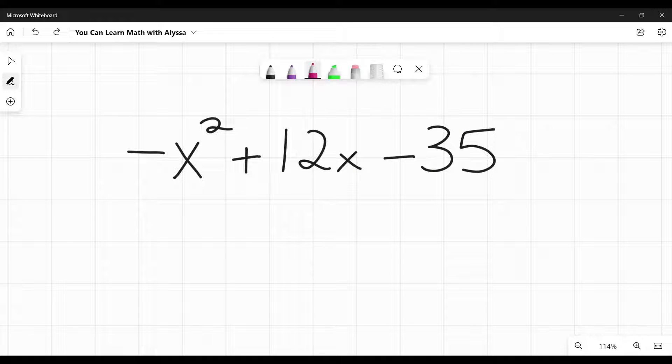When you're asked to factor a quadratic that has a negative in front of the x squared, the easiest way by far is to simply factor out a negative one from the entire quadratic.